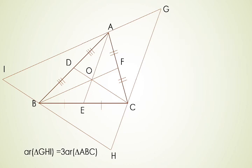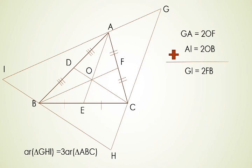Keep that aside and proceed further. GA is equal to 2×OF and AI is equal to 2×OB, since these are similar triangles. We already know that AC is two times AF, and hence the ratio of sides is 2. We get GA is equal to 2×OF and AI is equal to 2×OB. Adding this, we get GI is equal to 2×FB, similarly GH is equal to 2×AE and IH is equal to 2×CD.